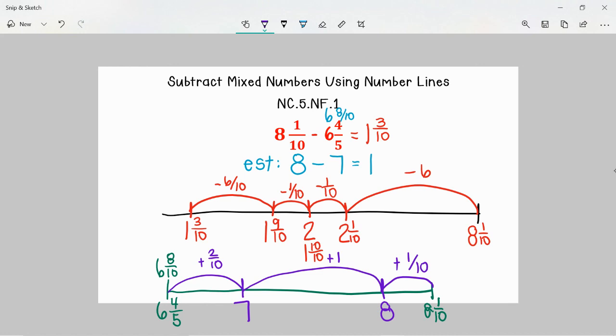So I have been able to find the difference between 6 and 8 tenths and 8 and 1 tenth by using addition. Now the way that I can see what the answer is here is I need to figure out how much did I have to jump to get from 6 and 4 fifths to 8 and 1 tenth. So here I had 2 tenths, here I had 1 whole, so we would be at 1 and 2 tenths. And then here I had another tenth, so we would be at 1 and 3 tenths, which is the same thing as what we got up here. So those are two different ways students might be able to subtract mixed numbers using number lines.